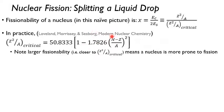And again, keep in mind that a larger fissionability means you're more prone to fission. So you don't need to be exactly equal to one to fission. You just, as you approach it, you're going to be more prone to fission.